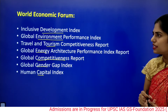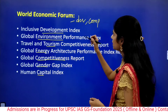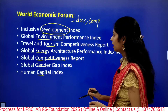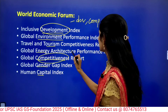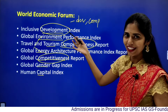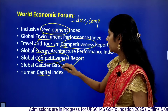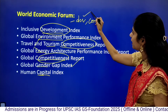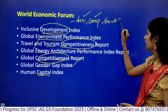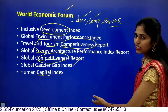To remember these, note that anything related to development and competitiveness is linked to World Economic Forum. So we have Inclusive Development Index, Competitiveness Index, Energy and Environment-related reports, Gender Gap Index, and Human Capital Index. Development, Competitiveness, Environment, and Energy-related reports all come from World Economic Forum — a total of 7 reports.